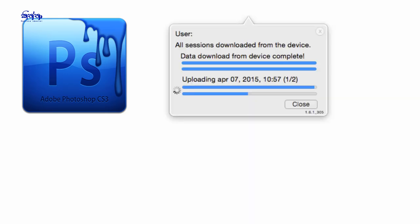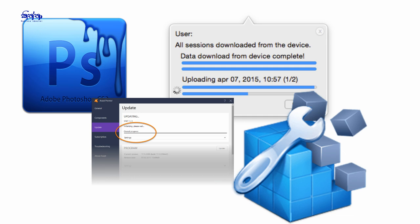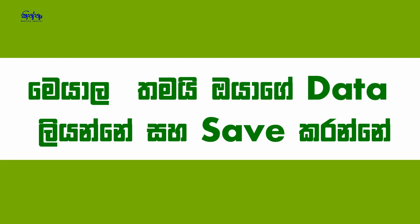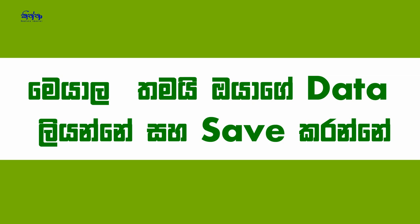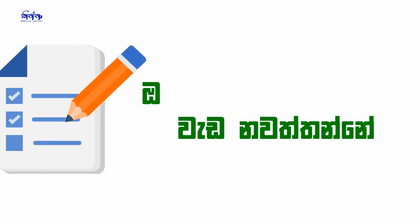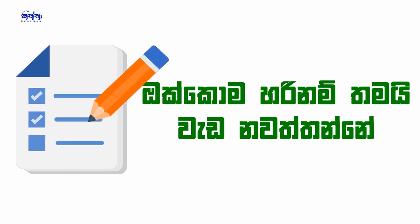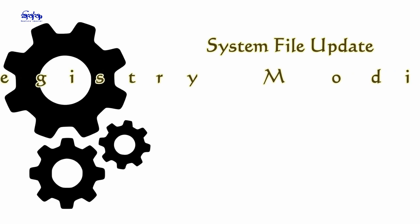This is the software — the file downloading, the program update, and the registry key modification. This program can save your data. This is the shutdown command. You can save your data, and this program is closed.